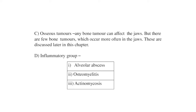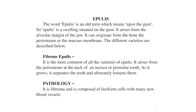Epilis is an old term meaning 'upon the gum.' It is a swelling situated on the gum, arising from the alveolar margins of the jaw. It can originate from the bone, the periosteum, or the mucous membrane.